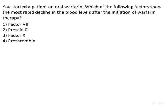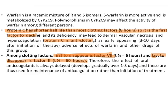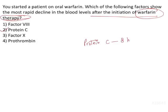You started a patient on oral warfarin. Which of the following factors shows the most rapid decline in blood levels after initiation of warfarin therapy? The answer is Protein C, which has a half-life of 8 hours. Factor 7 has a half-life of 6 hours and would decline faster, but since Factor 7 is not in the options, we mark Protein C as the answer.